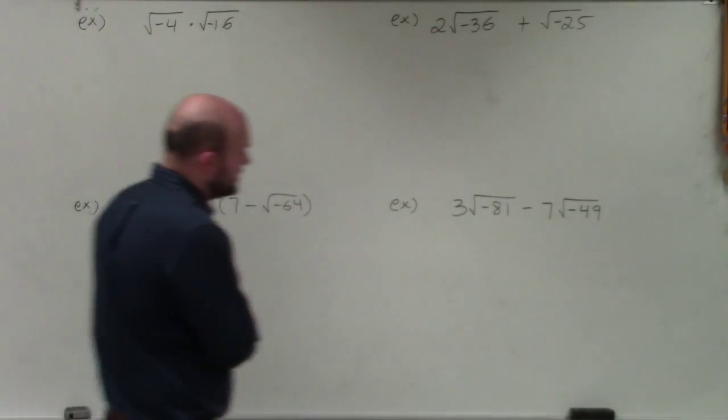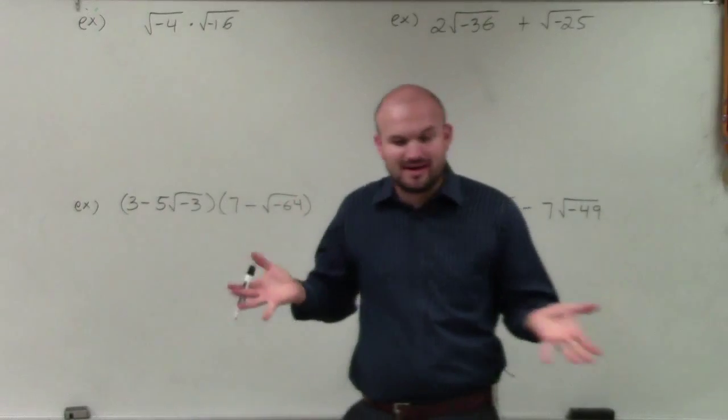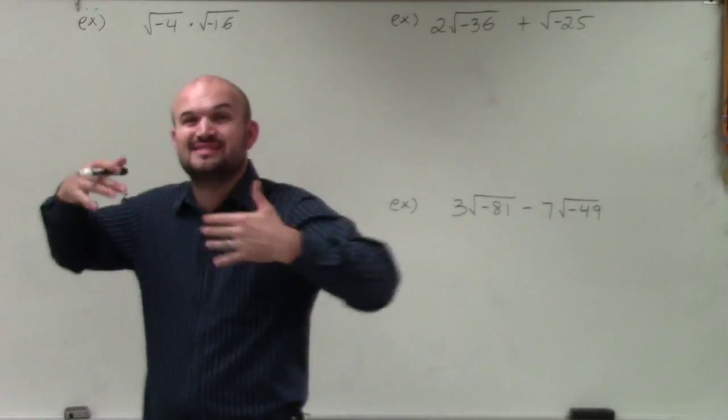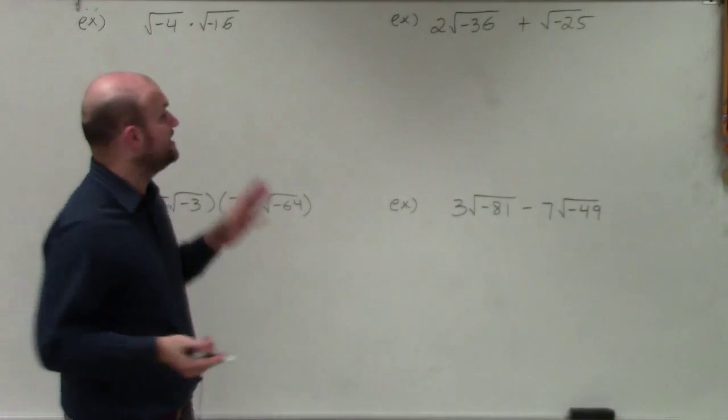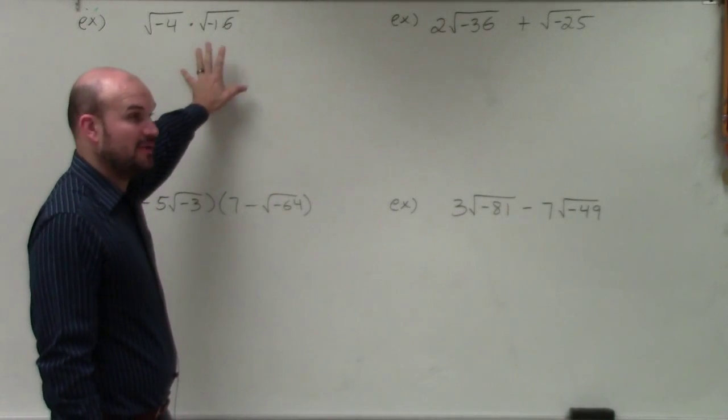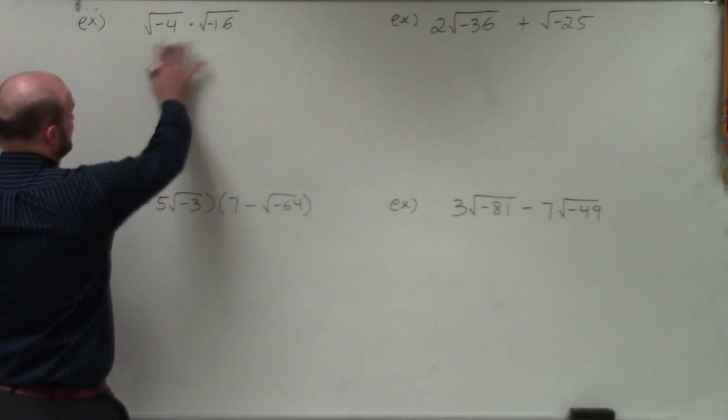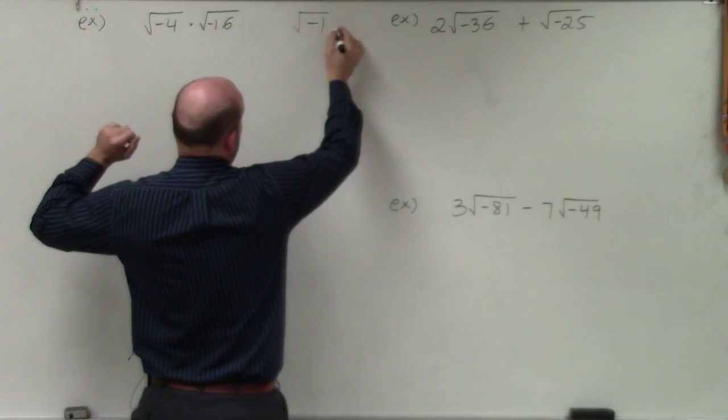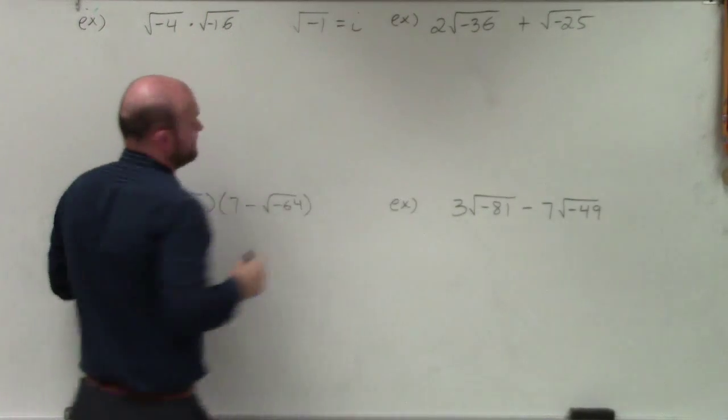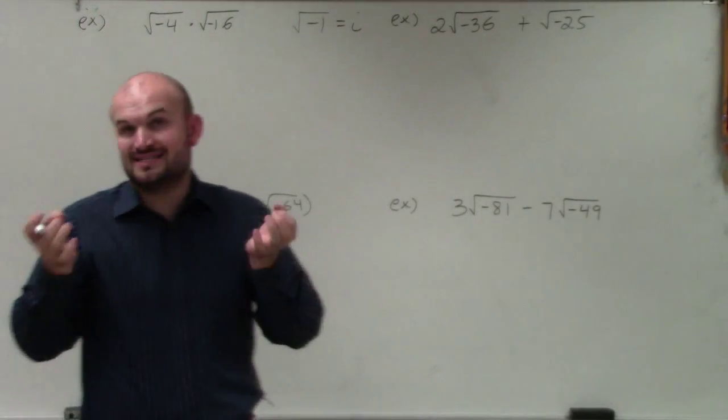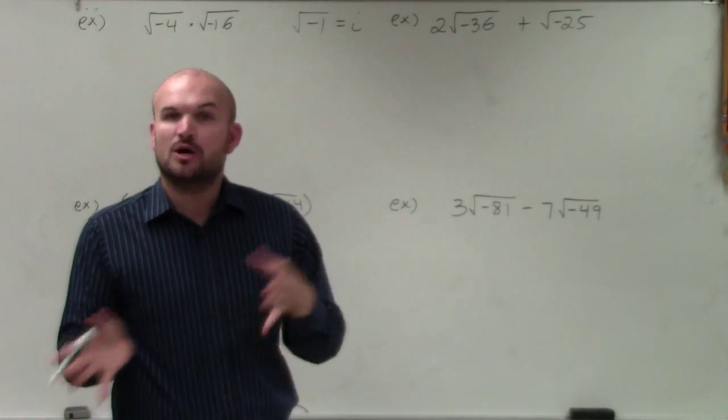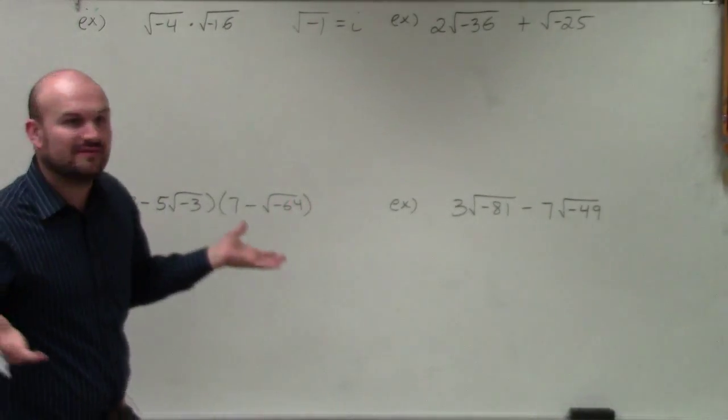In this example, we want to apply some operations, but the problem is we're taking the square root of a negative number and we want to use complex numbers. To do that, we need to understand how to rewrite the square root of a negative number as a complex number. For this problem, we rewrite our imaginary unit: square root of negative 1 is equal to i. Once we use our imaginary unit, we can now apply operations like we've been familiar with.